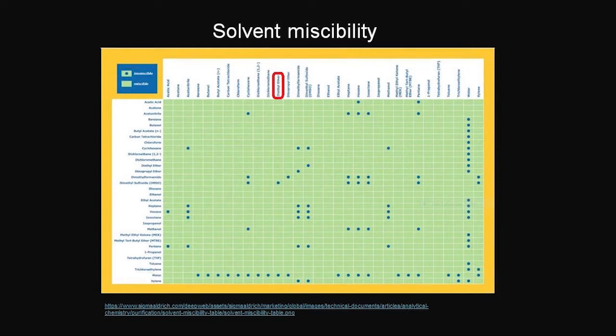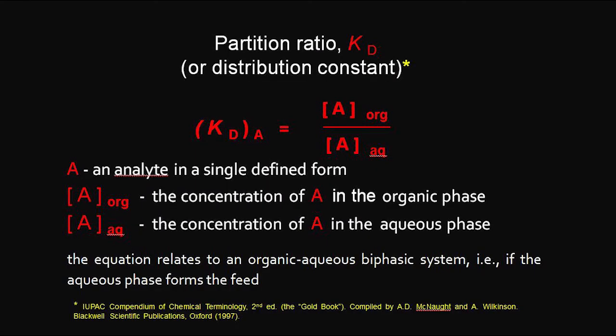The immiscibility chart shows us that dichloromethane and water are immiscible. Ether is also immiscible with water.